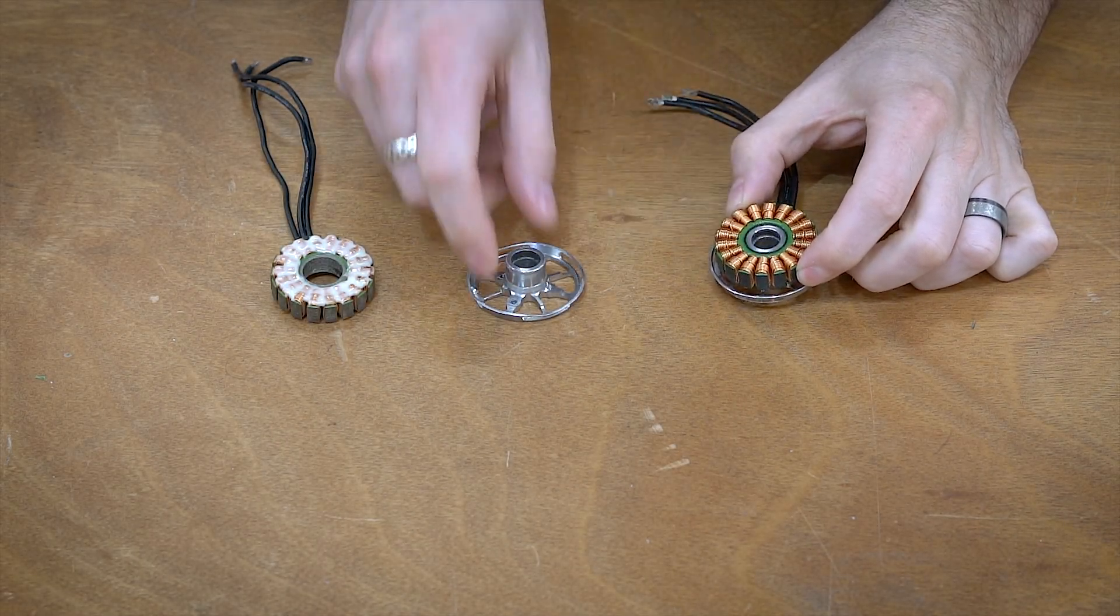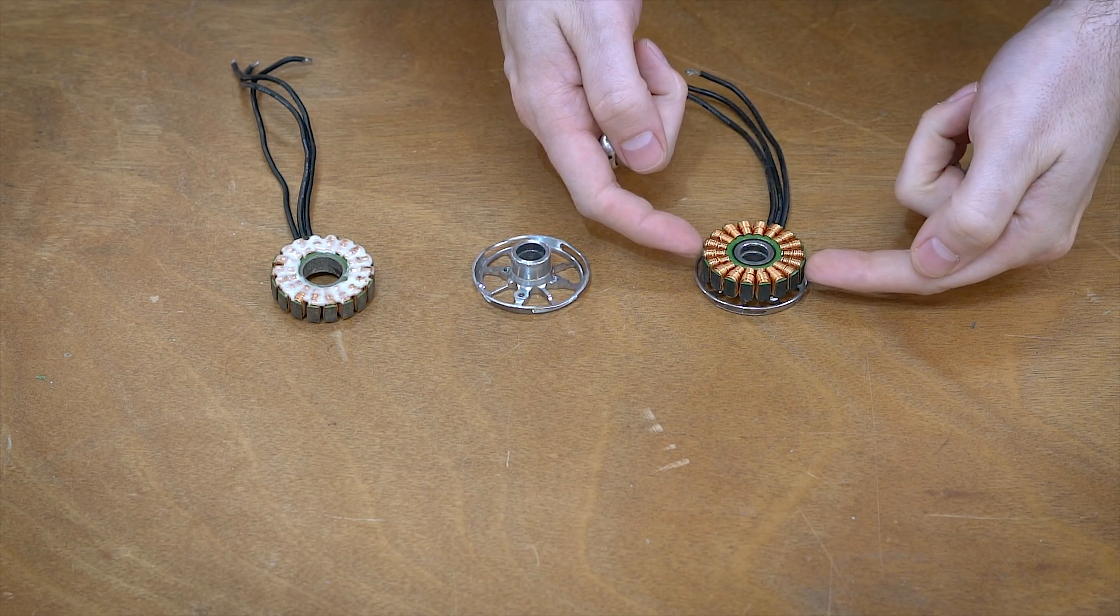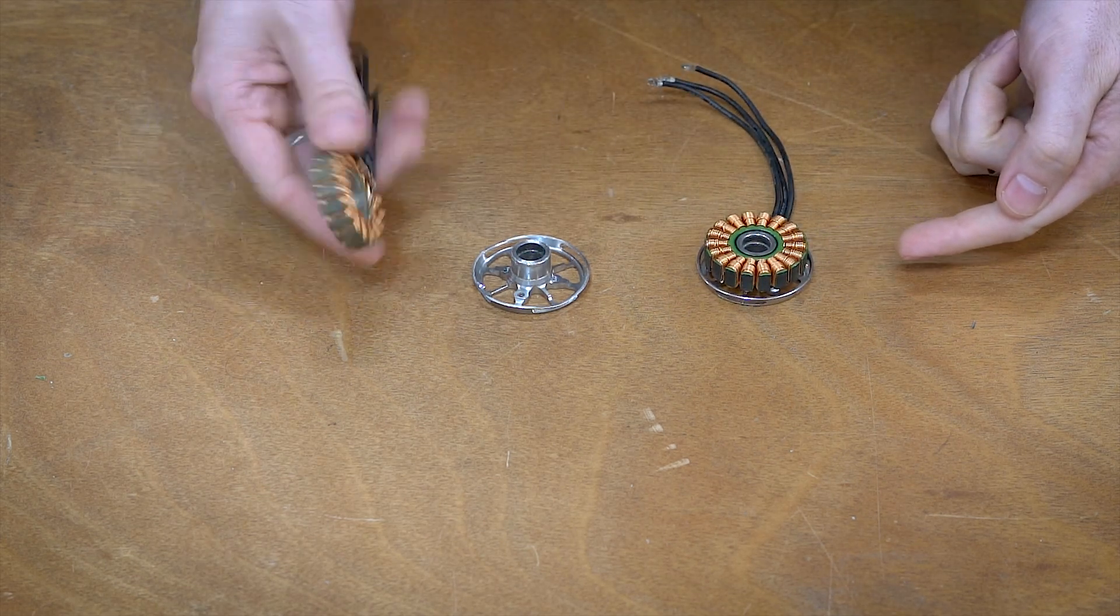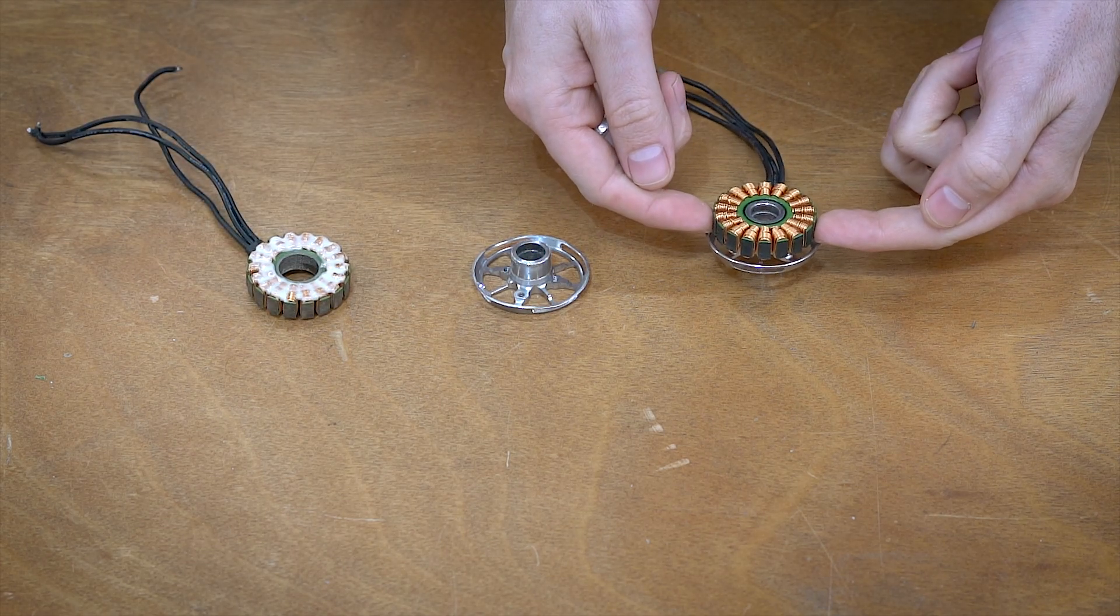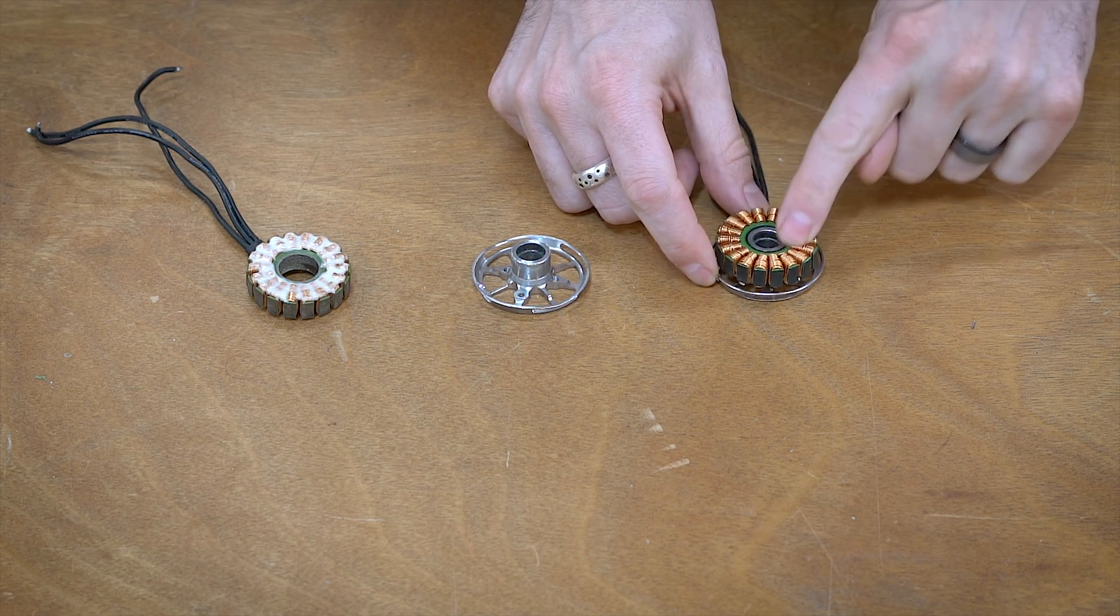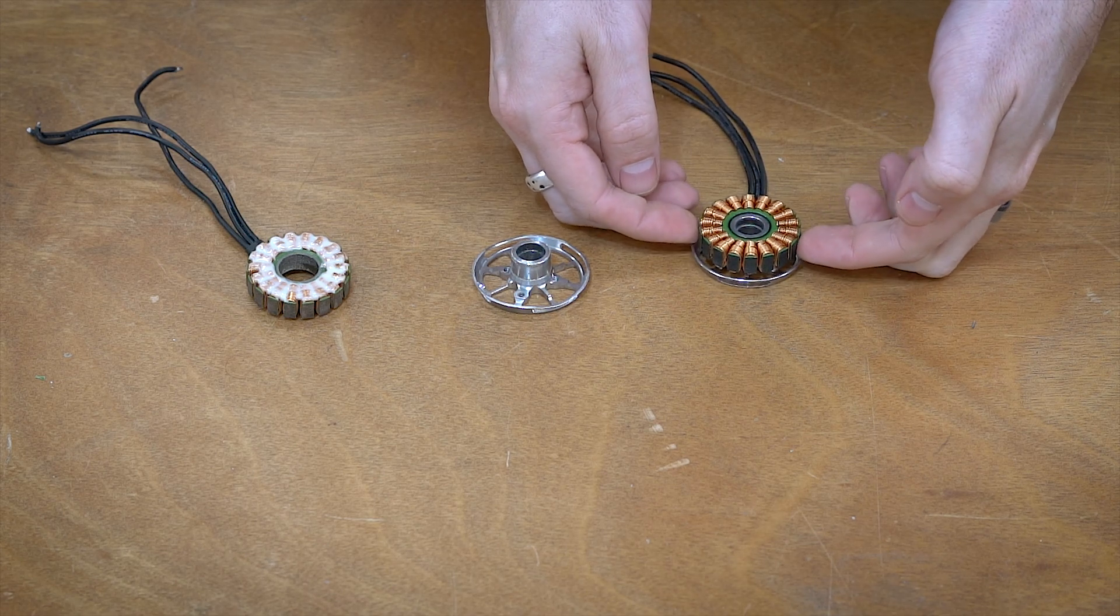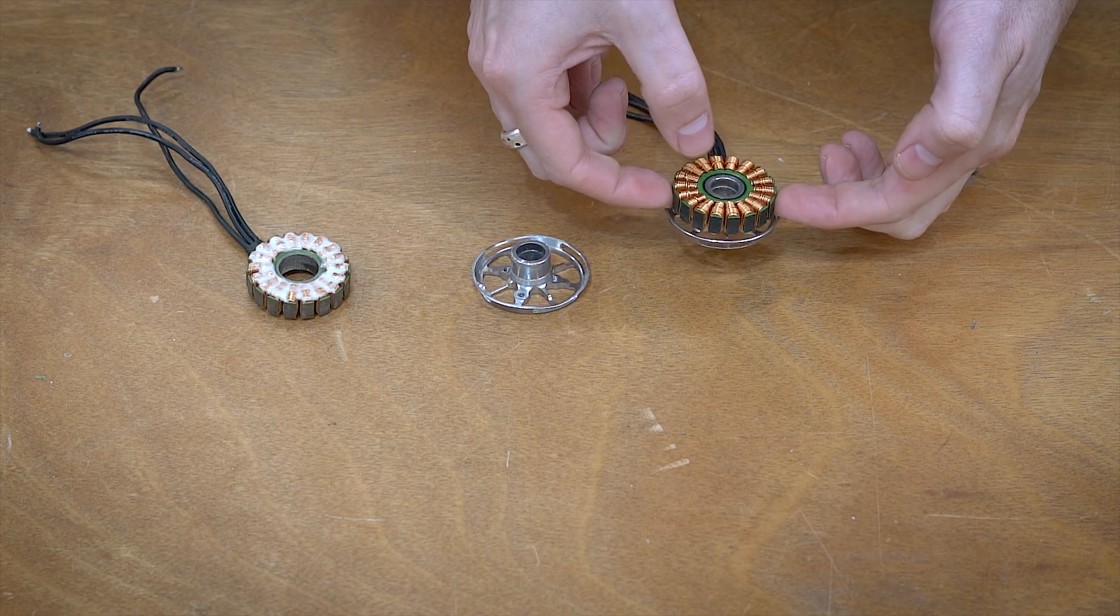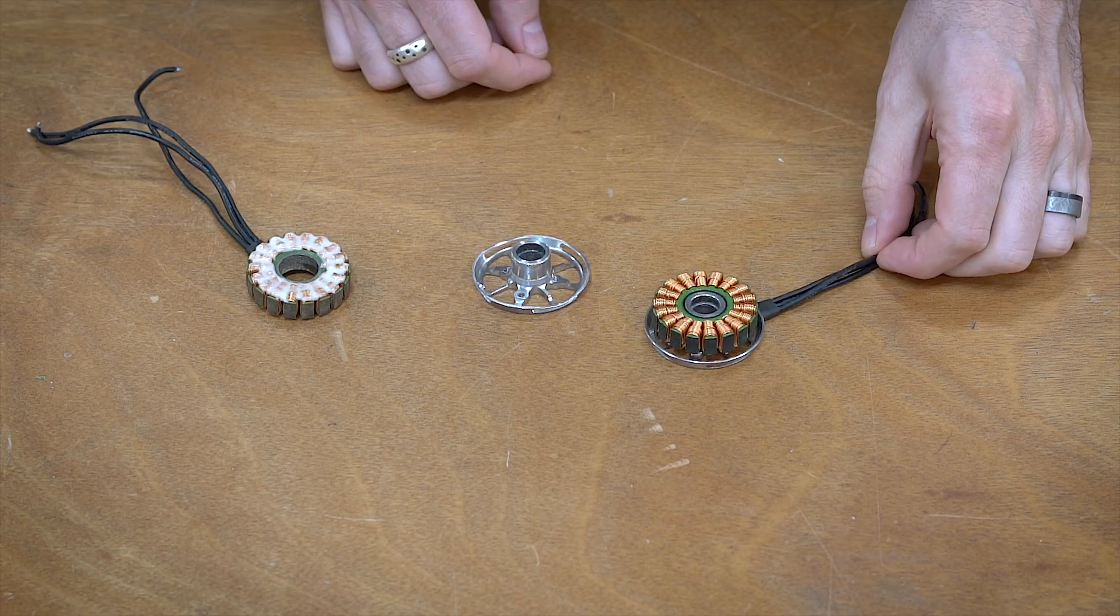So what we're trying to do is remove this base from the stator, and the biggest problem with doing it is there's really nothing to hold on to on this piece. We just want to hold on to the outside lip. There's just a very slight lip. We don't want to damage any of these windings or put any pressure on those. So we just want to hold it like that and then use the arbor press to press out the center.